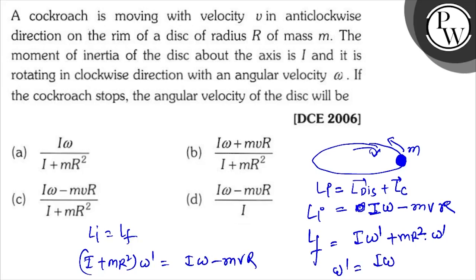L initial became I omega minus m v R. And the final angular velocity omega final equals I omega minus m v R divided by I plus m R square. So the right answer will be option C.